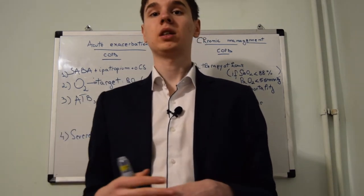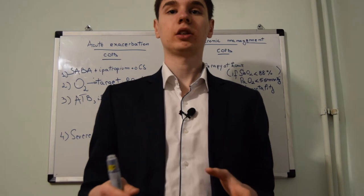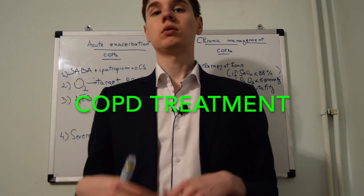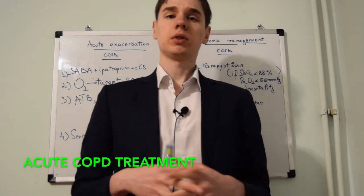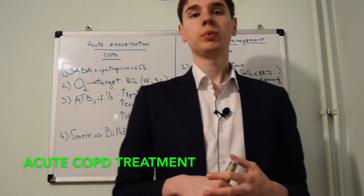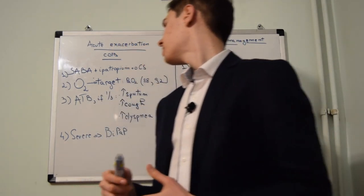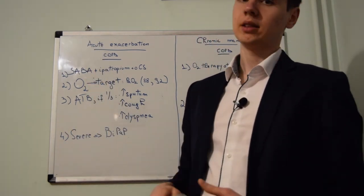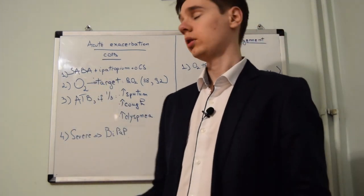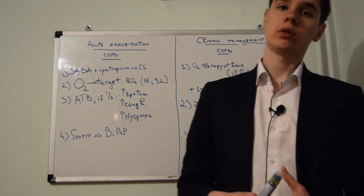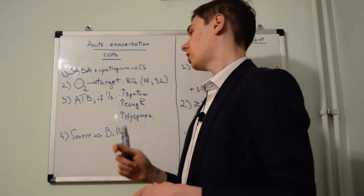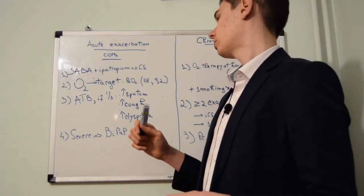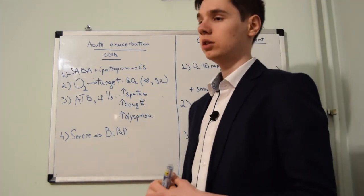The NBME also tests the treatment for acute versus chronic COPD. The treatment for acute COPD is largely represented by short-acting beta-2 agonists such as albuterol with ipratropium and oral corticosteroids. Oxygen therapy is indicated with a target oxygen partial pressure between 88 and 92.